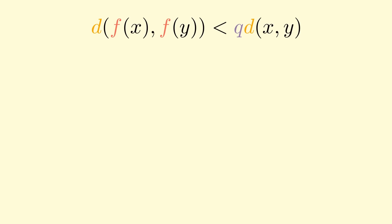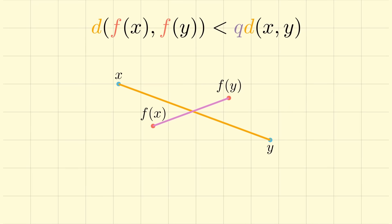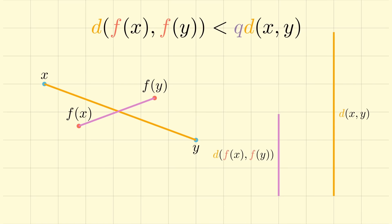Now let's break down the contraction inequality. What this is saying is that if you have any two points in your space — call them x and y — and consider the distance between them, then if you apply the function to these two points to get f(x) and f(y), and also consider the distance between them, you have some relationship between these distances. Namely, that the distance after applying the function is less than the distance before applying the function multiplied by some scaling factor q, where q is between 0 and 1. You can see that this idea encapsulates the notion of a shrinking function, because the distance between points always gets smaller and closer together.